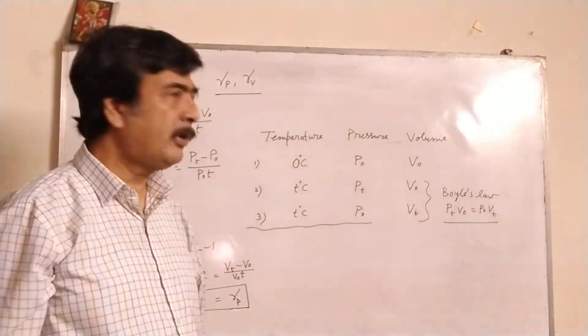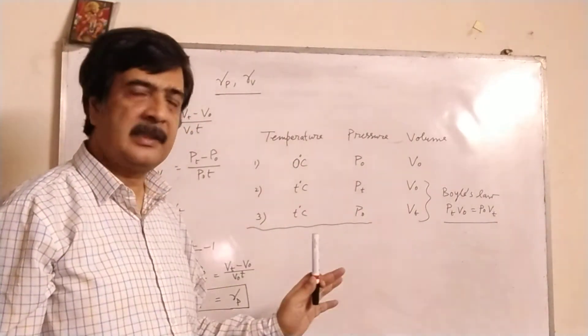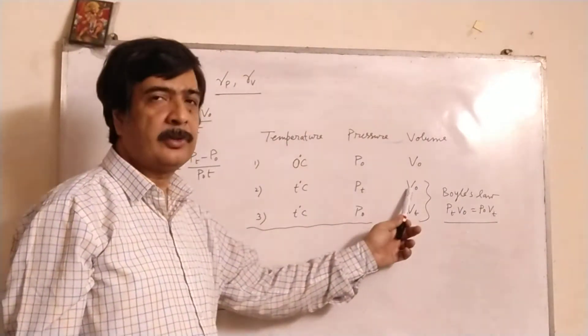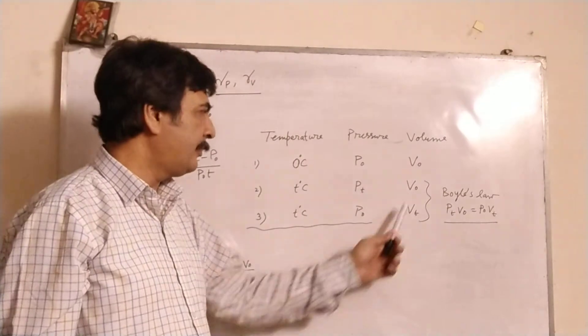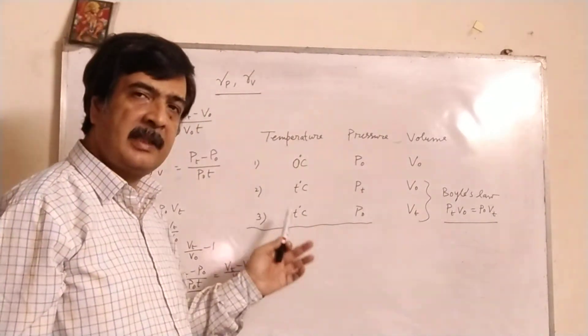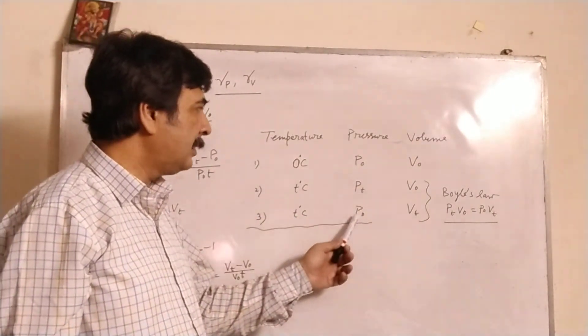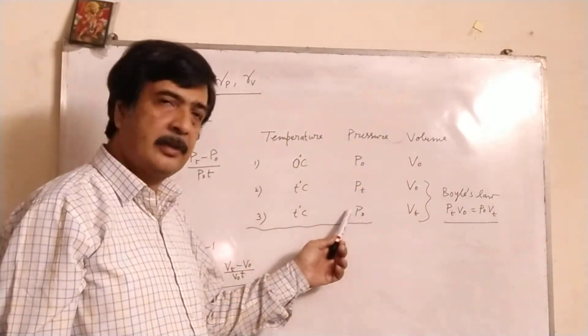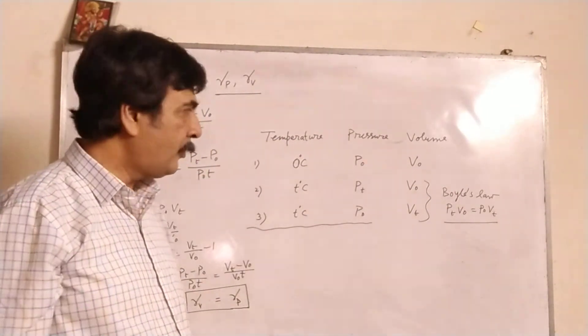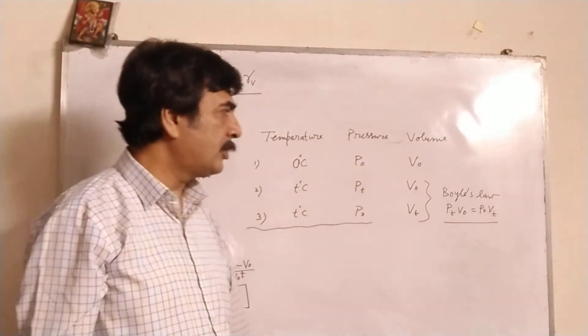For the final condition at t degrees Celsius, in one case pressure is changed to P_t but volume is unchanged at V_0. In the third condition, temperature is again changed from initial but pressure is unchanged at P_0 and volume is changed to V_t. Since the second and third cases are both at t degrees Celsius, we can apply Boyle's law.